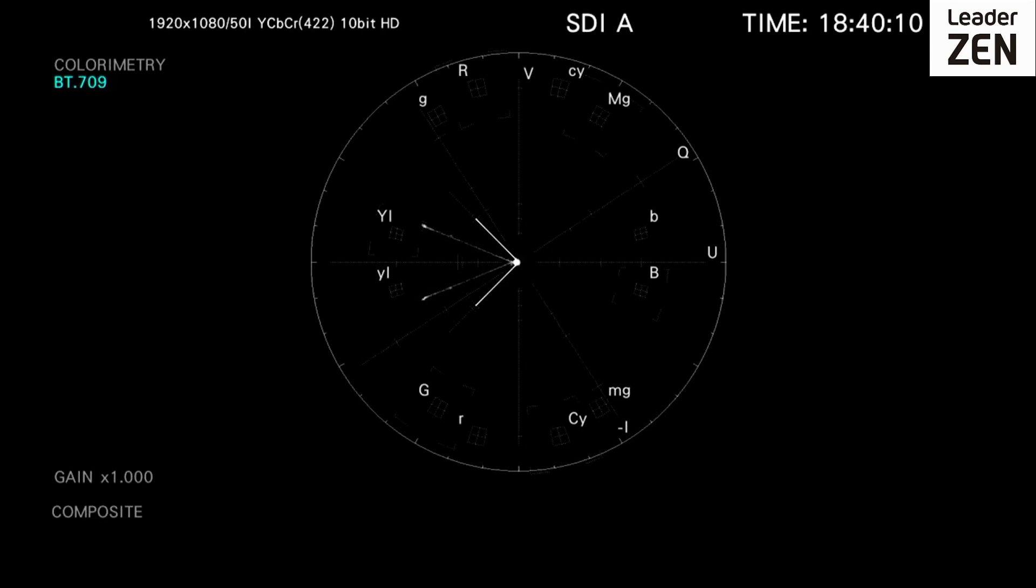While a waveform display allows a broadcast technician to measure the overall characteristics of a video signal, a vectorscope is used to visualize chrominance which is encoded into the video signal.